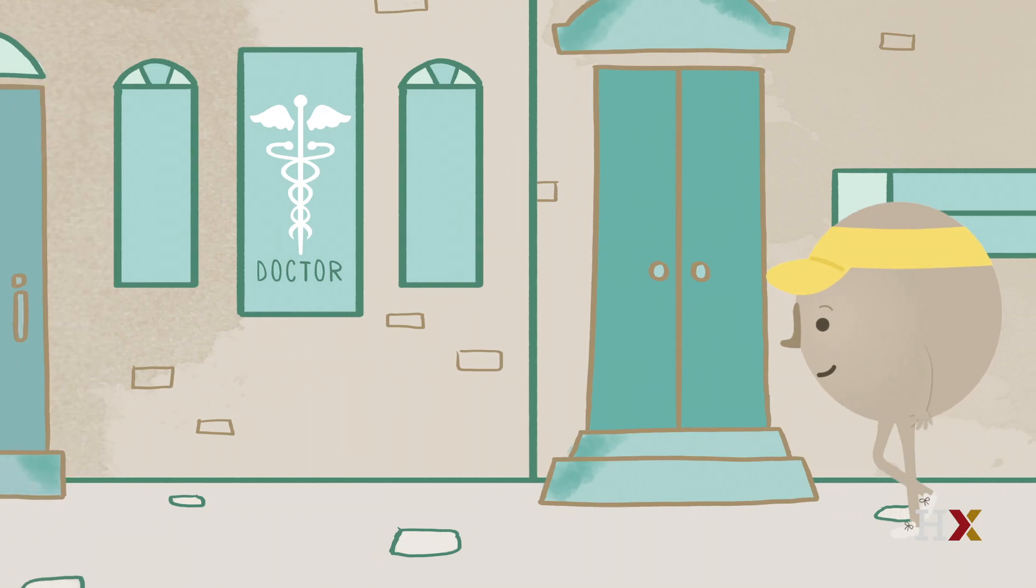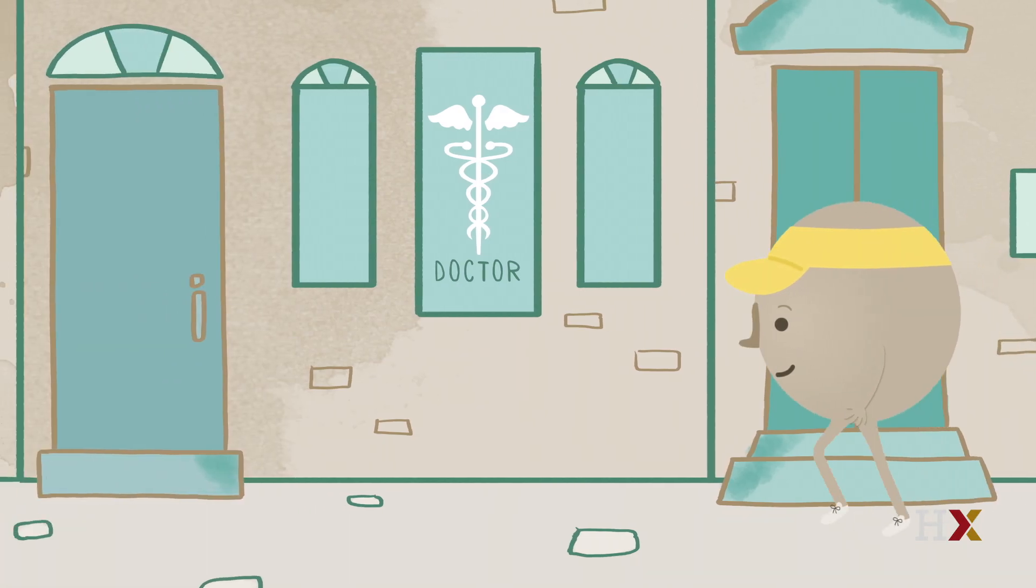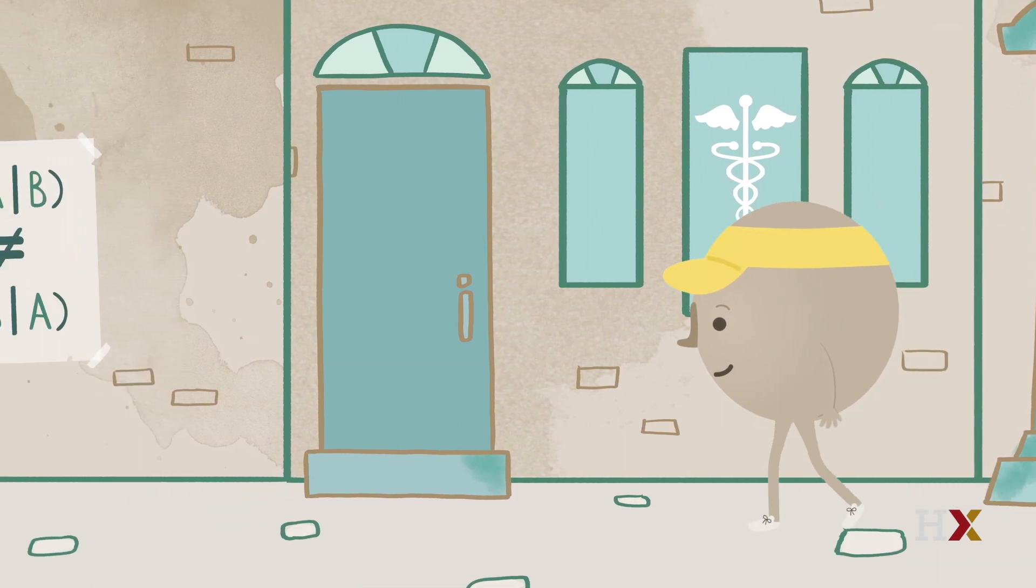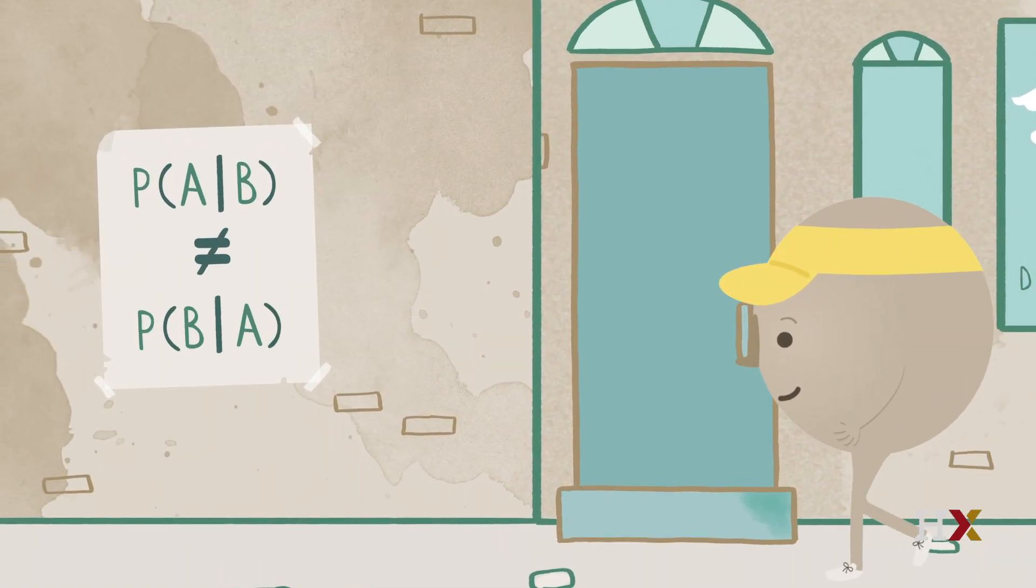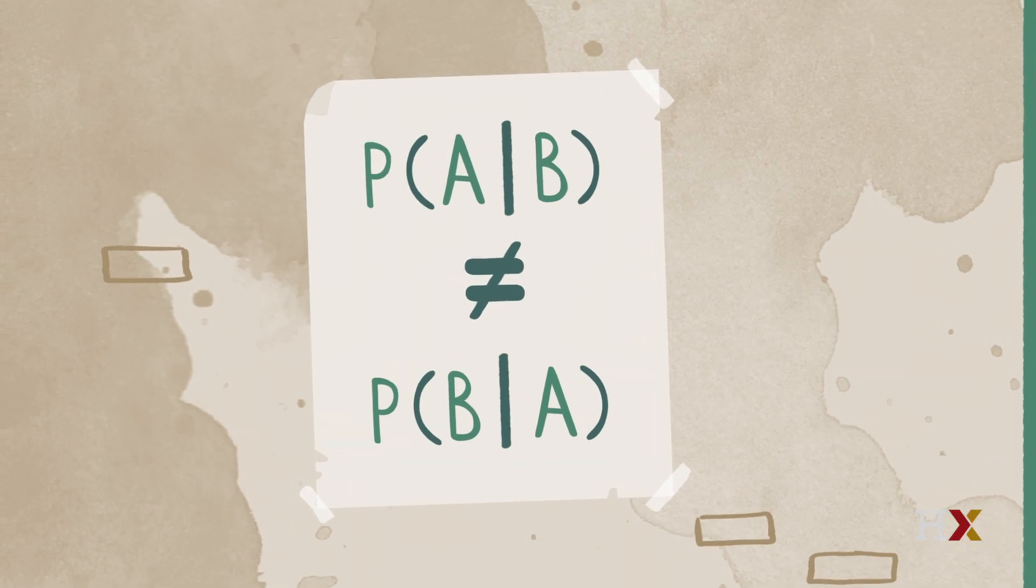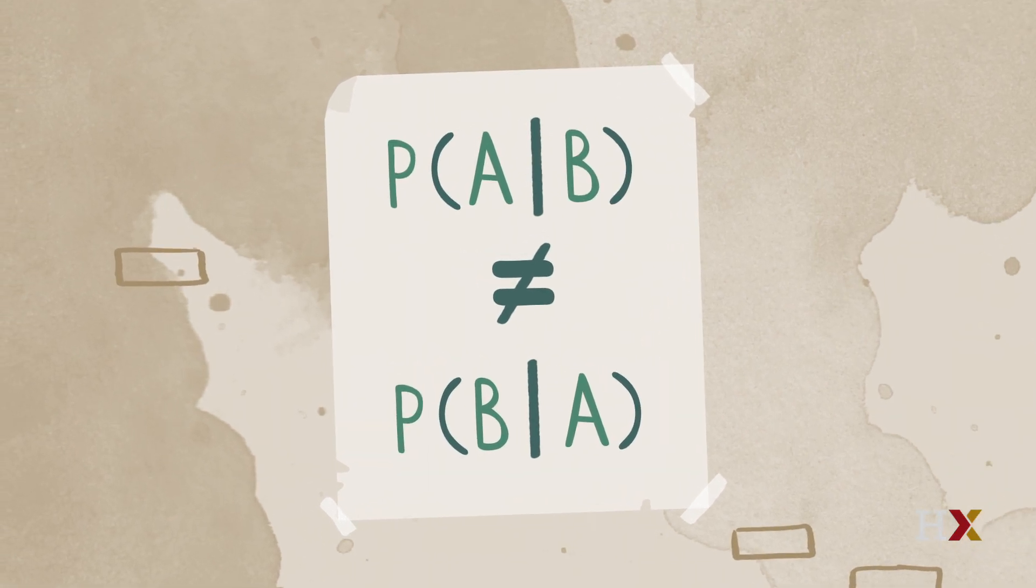In general, we need to take into account the rarity of a disease, not just the accuracy of a test. And we need to distinguish between the probability of having a disease given that you test positive, and the probability that you test positive given that you have the disease.